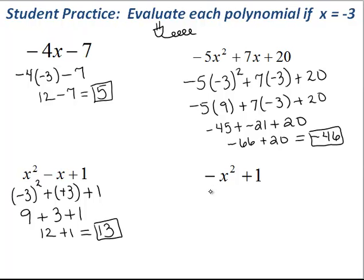On our last example, again, we will replace x with a negative 3. So we'll plug that in. Again, we'll work on exponents. So negative 3 squared happens to be a positive 9.